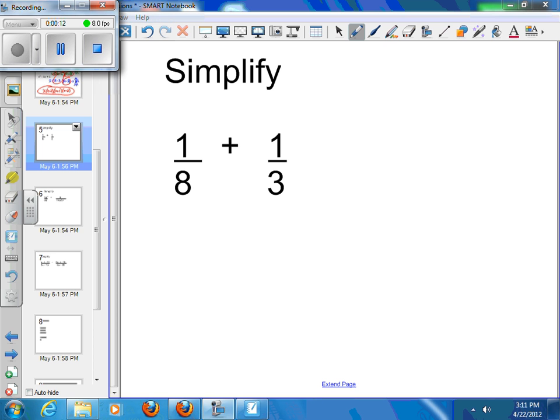The common denominator between 8 and 3 is 24. So to get to 24, this one gets multiplied by 3 top and bottom, so you get 3/24. The other one gets multiplied by 8 top and bottom, so that becomes 8/24. And so your answer would be 11/24.